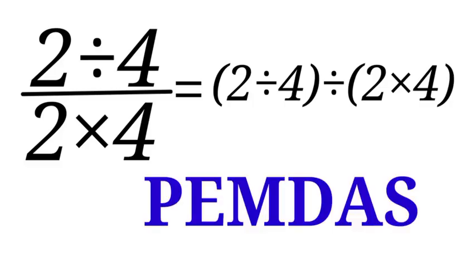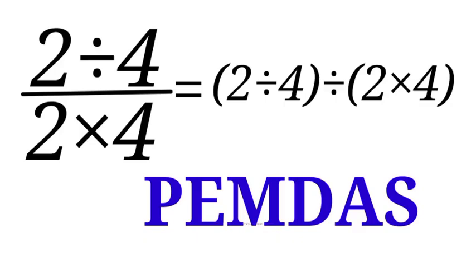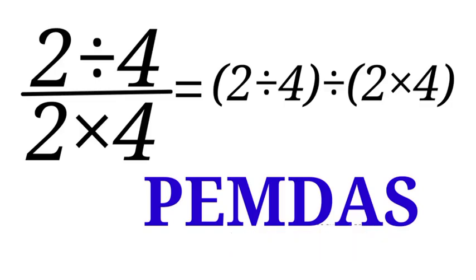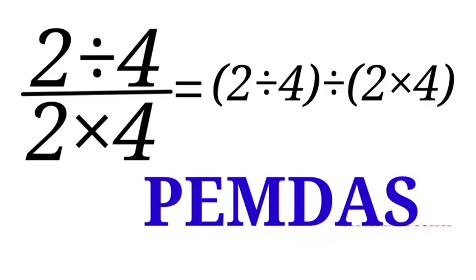We will be using PEMDAS to solve this question. P is for parentheses, E is for exponents, M is for multiplication, D is for division, A is for addition, and S is for subtraction. When using the order of operations, you have to go from left to right — from P you go to E, from E you go to M.